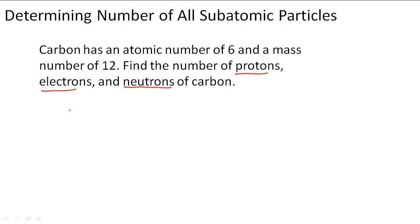So we know that carbon, or C, has an atomic number of 6, which means that it also has 6 protons because the atomic number tells us the number of protons.